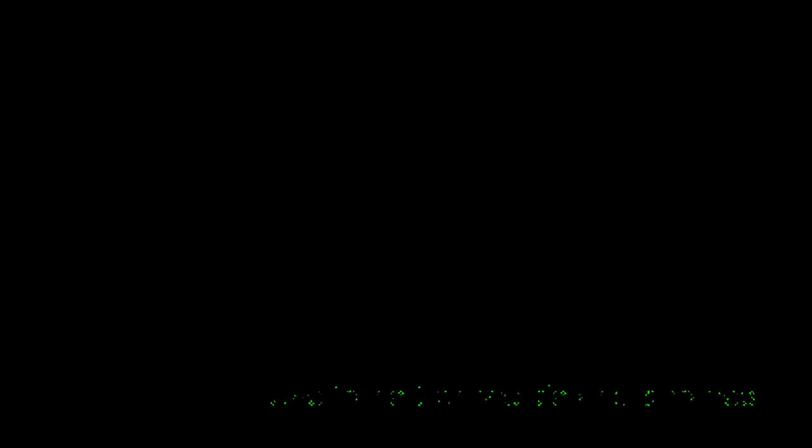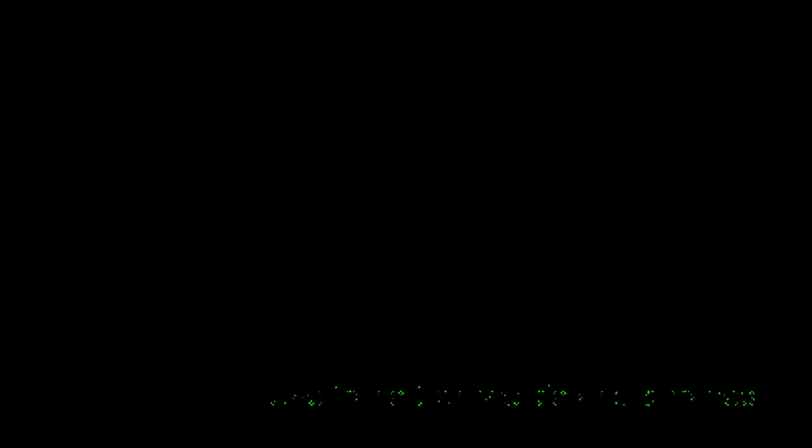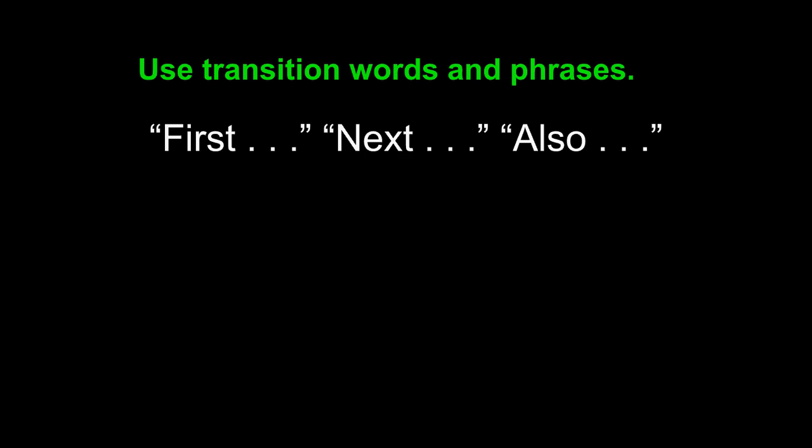Transition language is simple to use, but it is powerful in its effect. If you use transition words and phrases between sentences, you can clarify how one sentence relates to the next. Your math teacher will see the clear progression of ideas from sentence to sentence. Using words like 'first,' 'next,' or 'also' are simple and easy.